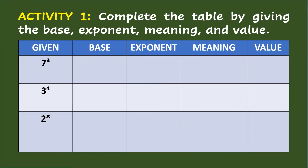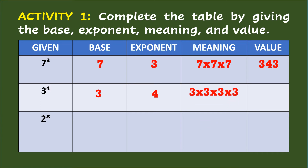Activity 1: complete the table by giving the base, exponent, meaning, and value. For the first given number, 7 to the third power, the base is 7, the exponent is 3, the meaning is 7 times 7 times 7, which has the value of 343. For the second given number, 3 to the fourth power, the base is 3, the exponent is 4, the meaning is 3 times 3 times 3 times 3, which has the value of 81.